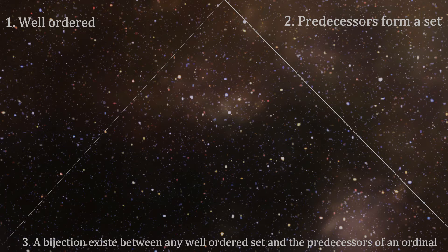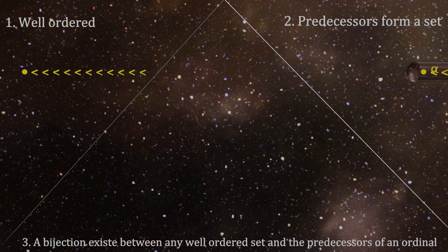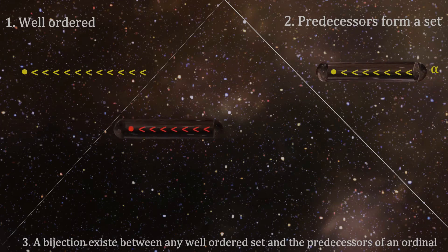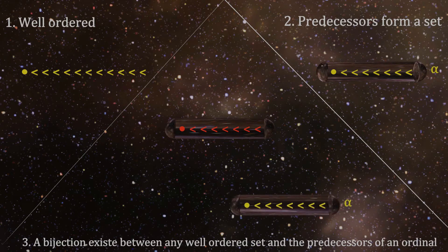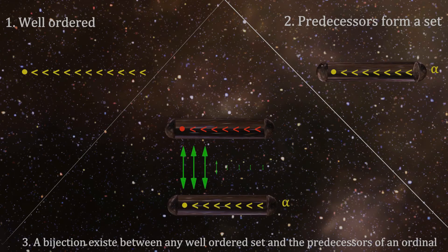Therefore, we want to define the ordinals with these three attributes. First, the ordinals should be well-ordered. Second, for any ordinal, the predecessors should form a set. Third and finally, for any well-ordered set, there is a one-to-one correspondence between the well-order and the predecessors of a given ordinal. Any model that satisfies these three conditions captures the entire behavior of ordinals as order types.